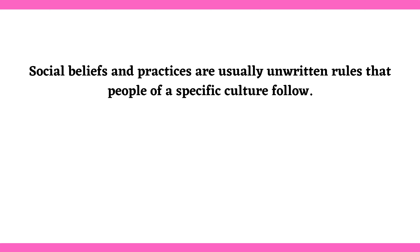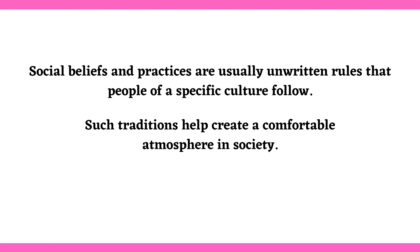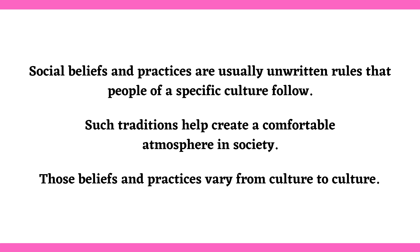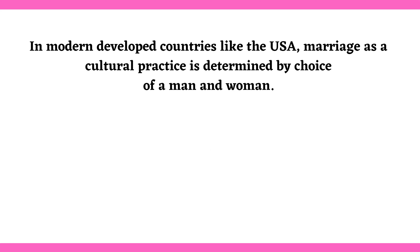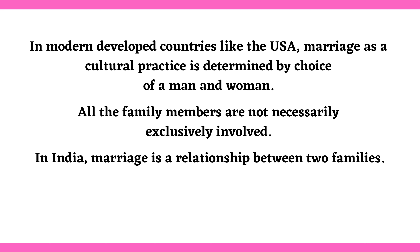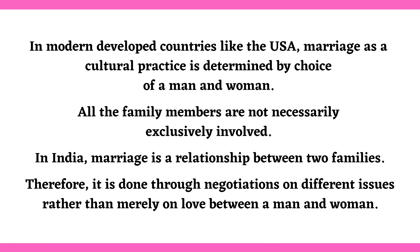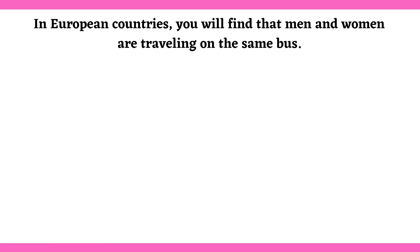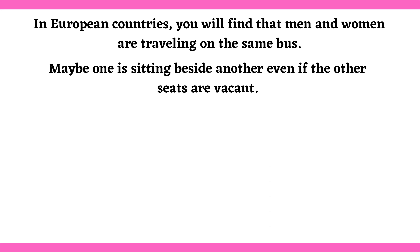Talking about beliefs and practices in your culture. Social beliefs and practices are usually unwritten rules that people of a specific culture follow. Such traditions help create a comfortable atmosphere in society. Those beliefs and practices vary from culture to culture. In modern developed countries like the USA, marriage as a cultural practice is determined by choice of a man and woman, and all the family members are not necessarily exclusively involved. In India, marriage is a relationship between two families. Therefore, it is done through negotiations on different issues rather than merely on love between a man and woman.